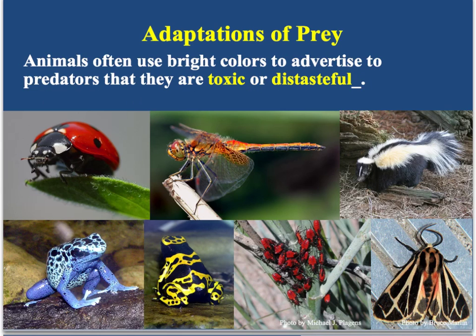Anything in the animal kingdom, and sometimes even the plant kingdom, that's brightly colored is pretty much an advertisement saying 'I don't taste good' or 'I will kill you, don't eat me.' We use colors, stripes, and patterns to warn predators that we're not good to eat. Here are some more poison dart frogs, a monarch butterfly — they're really poisonous — and here are skunks. Skunks can spray a really nasty-smelling substance that makes us sick.